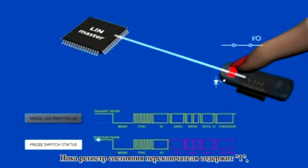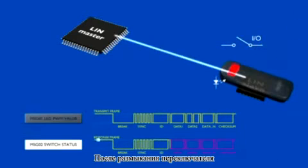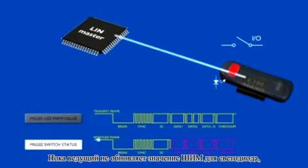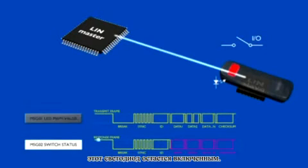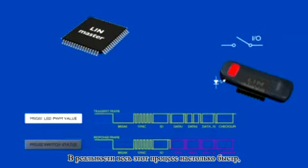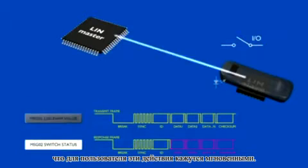As long as the switch status register in the slave remains 1, the corresponding bit in the response message remains 1 as well. When the switch is released, the register will be reset to 0, and the data in the next response frames will be 0 as well. As long as the master does not update the LED PWM information, the LED remains on. In real life, this whole process runs so fast that the user experiences instant reaction.